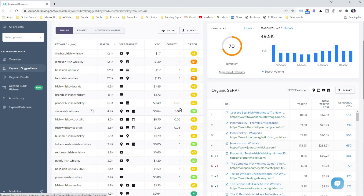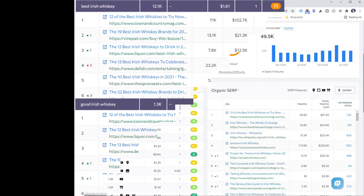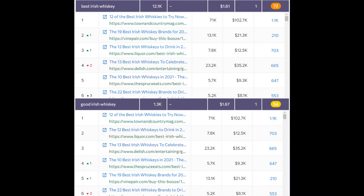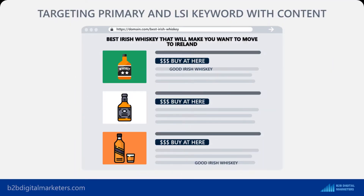Also, make sure to check every keyword to ensure you don't end up with keyword cannibalization. For example, the keywords 'Best Irish Whisky' and 'Good Irish Whisky' have the same ranking pages. Thus, you should target only 'Best Irish Whisky' and add 'Good Irish Whisky' as an LSI keyword in the content to rank for both keywords and maximize your SEO potential. And just like this, you can find SEO keywords for your main targeted topic clusters.